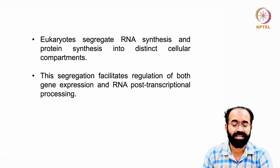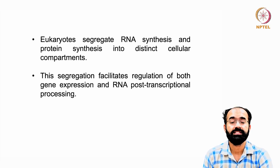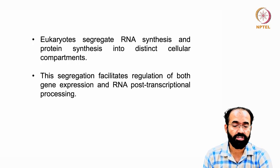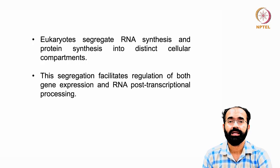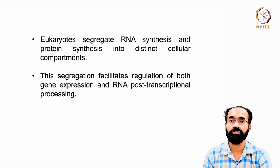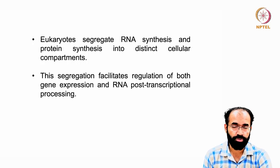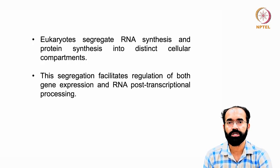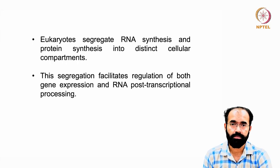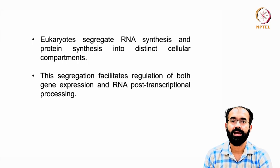Eukaryotes segregate RNA synthesis and protein synthesis into distinct cellular compartments. This segregation facilitates regulation of both gene expression and RNA post-transcriptional processing. Having a feature and retaining it across evolutionary time simply means it was needed, utilized, and advantageous. In eukaryotes, having a nucleus, nuclear pore complexes, and proteins helping in shuttling of RNA all provided a benefit over prokaryotes, which is why it was retained in advanced eukaryotes.